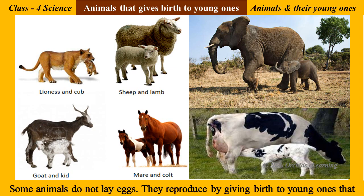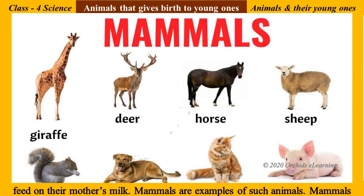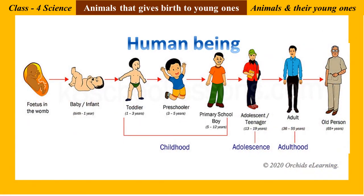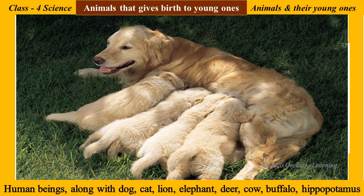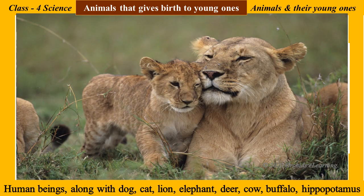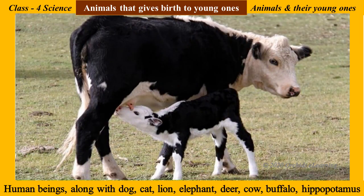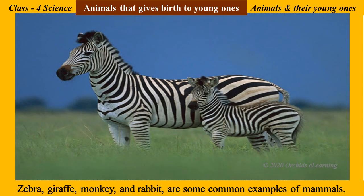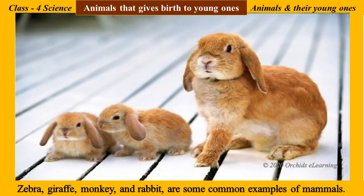Some animals do not lay eggs — they reproduce by giving birth to young ones that feed on their mother's milk. Mammals are examples of such animals. Mammals have very well-developed brains and most mammals have hair on their body. Human beings, along with dog, cat, lion, elephant, deer, cow, buffalo, hippopotamus, zebra, giraffe, monkey, and rabbit are some common examples of mammals.